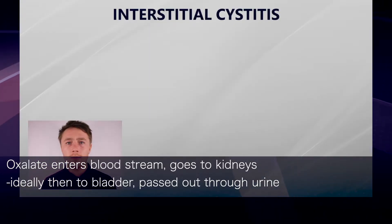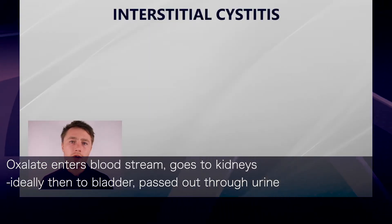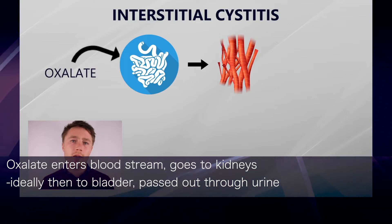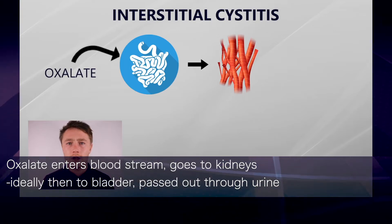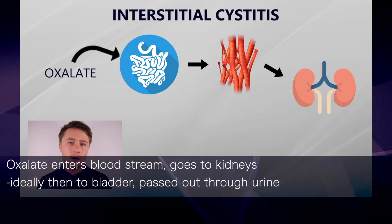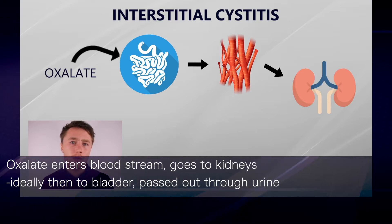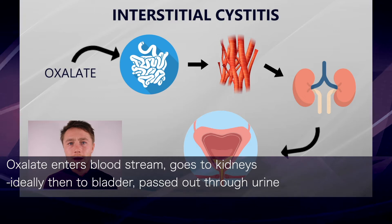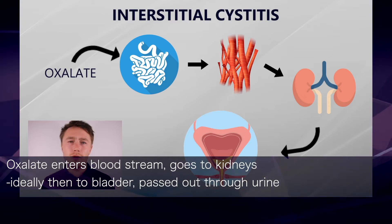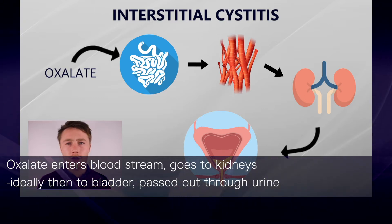We'll be looking at how the body deals with oxalate. Oxalate is absorbed into the bloodstream and it goes to the kidneys, and when it gets to the kidneys, ideally it's meant to go out through the kidneys into the bladder and then be passed through the urine via the urinary tract.